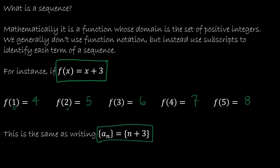And again, I would get the exact same values if I plugged in 1 — 1 plus 3 is still 4 — and so this would be considered a sub 1, or the first term in the sequence. And this would be considered a sub 2, the second term in the sequence.